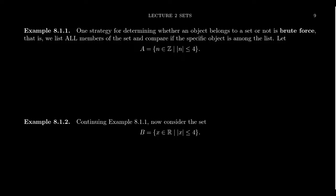Let's look at set A: the set of all integers such that the absolute value of the integer is less than or equal to four. This is set-builder notation from part one of this lecture, where the first part before the vertical line represents a typical element and defines what we call the universe — often referred to as the universal set. Our objects live within the set of integers, so we want all integers whose absolute value is less than or equal to four.